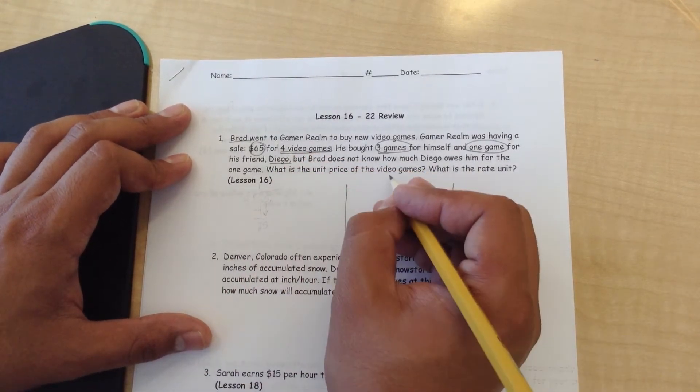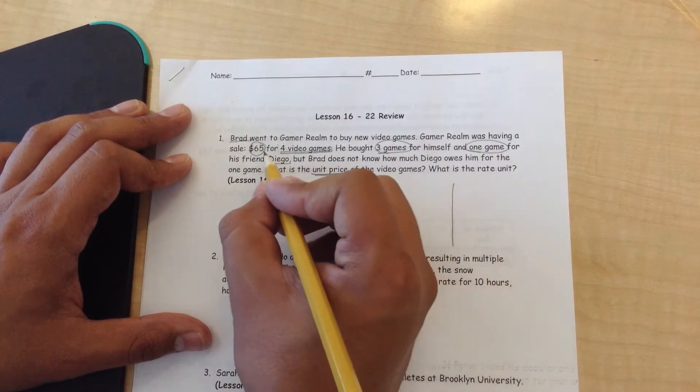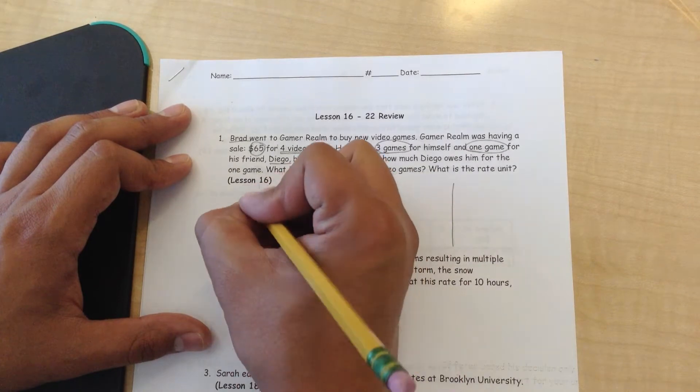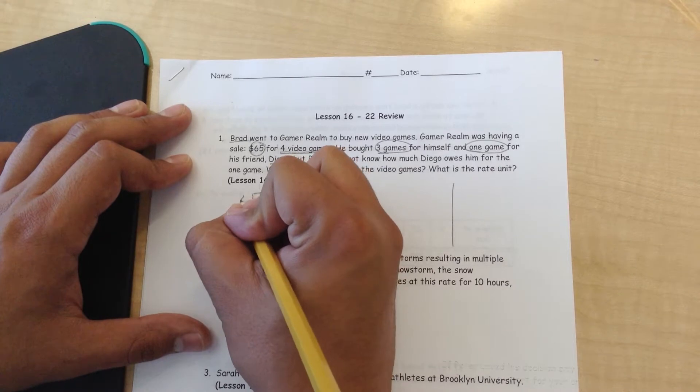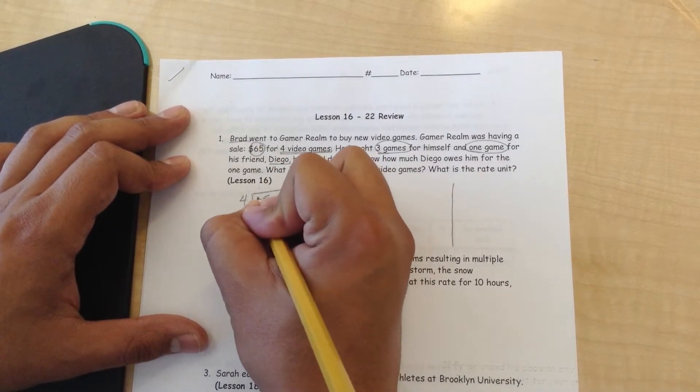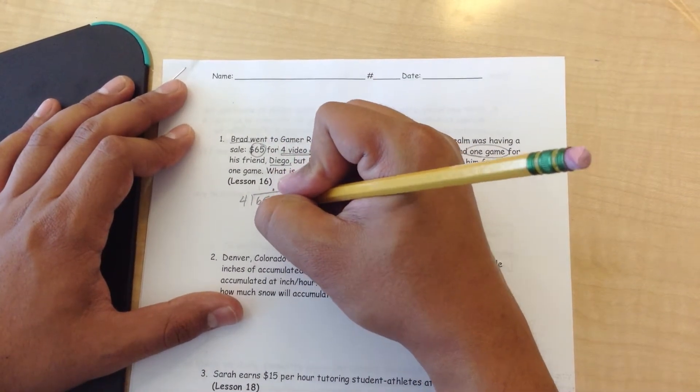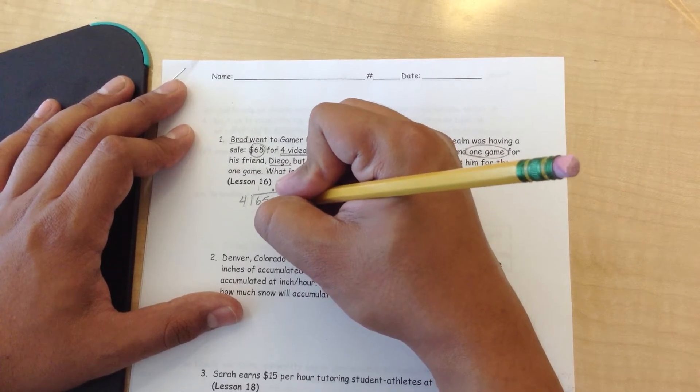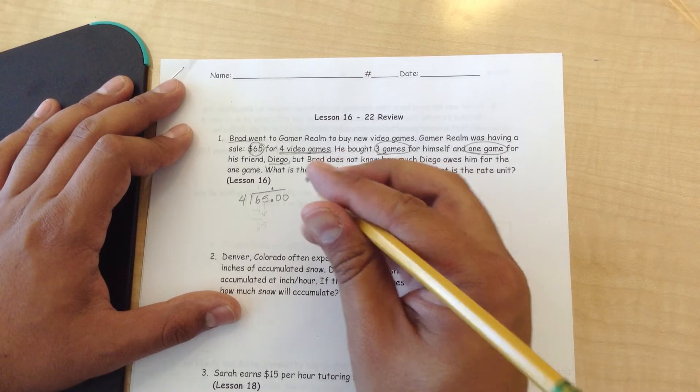First off, to find the unit rate, or the unit price, we need to find out how much each game costs. In order to do that, we get the total, which is $65, and we divide it by four. I'm going to write $65 right here. Every time you're dealing with the decimal, the first thing I suggest you do is place the decimal right here, line it up right on top of it, because that will keep everything in place.